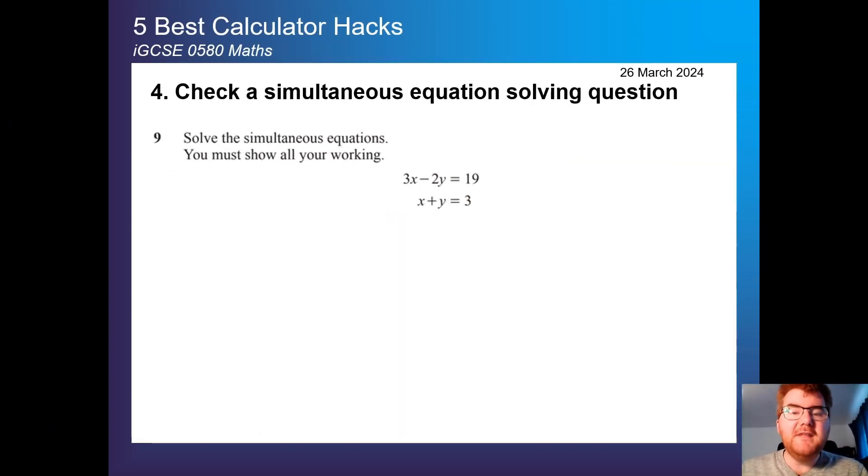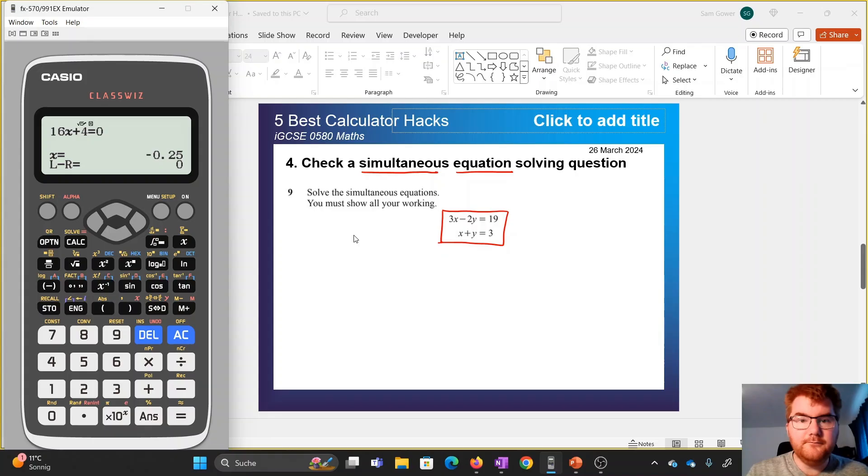Hack number 4 is actually solving simultaneous equations. Again, often comes up in both paper 2 and paper 4. So we have our simultaneous equation here. We go to menu. This time we're going to scroll down and we're going to go to the menu A here. So we're going to equation slash function, press equals, and it gives us two choices. We're going to look at both in this particular video. We want the simultaneous equation version. So we go to number one, number of unknowns where we have x and y, so we have two unknowns.